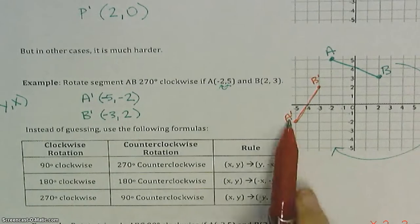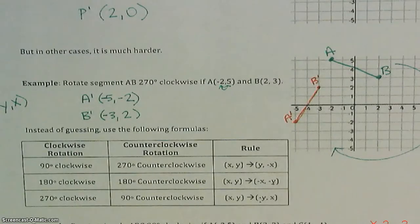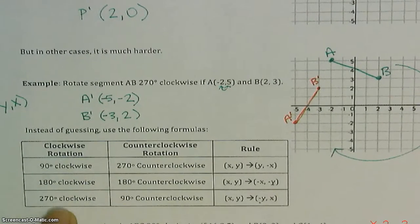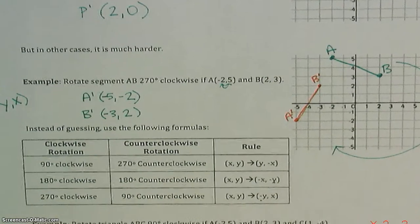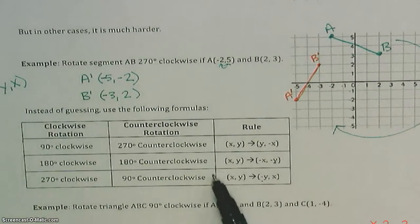This is what a 270-degree clockwise rotation looks like — it's also the same thing as 90 degrees counterclockwise.